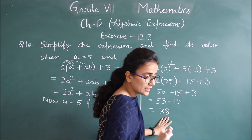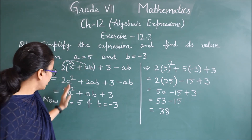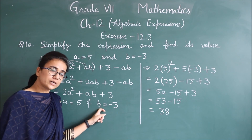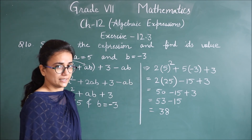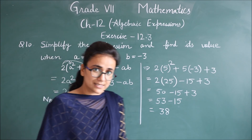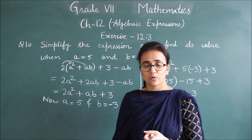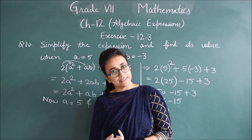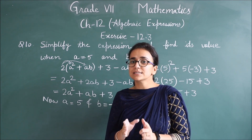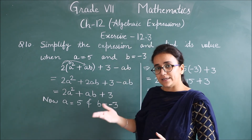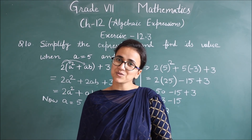Clear? What we had to do was simplify the given expression, then put the values of A and B to find the answer — that is, the value of the expression. So today we completed questions 8th, 9th and 10th of exercise 12.3. In the next class we will do exercise 12.4. Thank you, students.